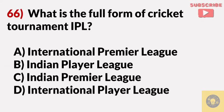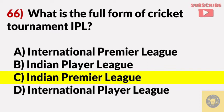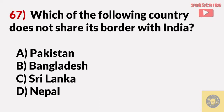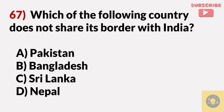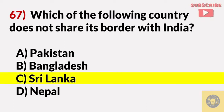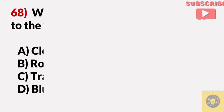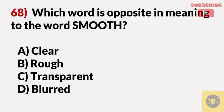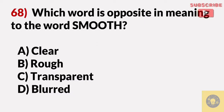What is the full form of the cricket tournament IPL? Answer C, Indian Premier League. Which of the following countries does not share its border with India? Answer C, Sri Lanka. Which word is opposite in meaning to the word smooth? Answer B, rough.